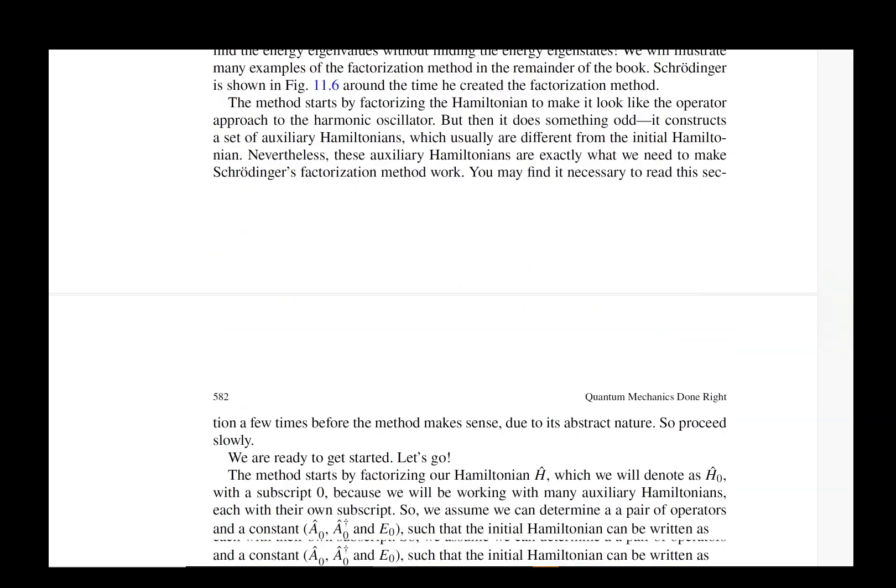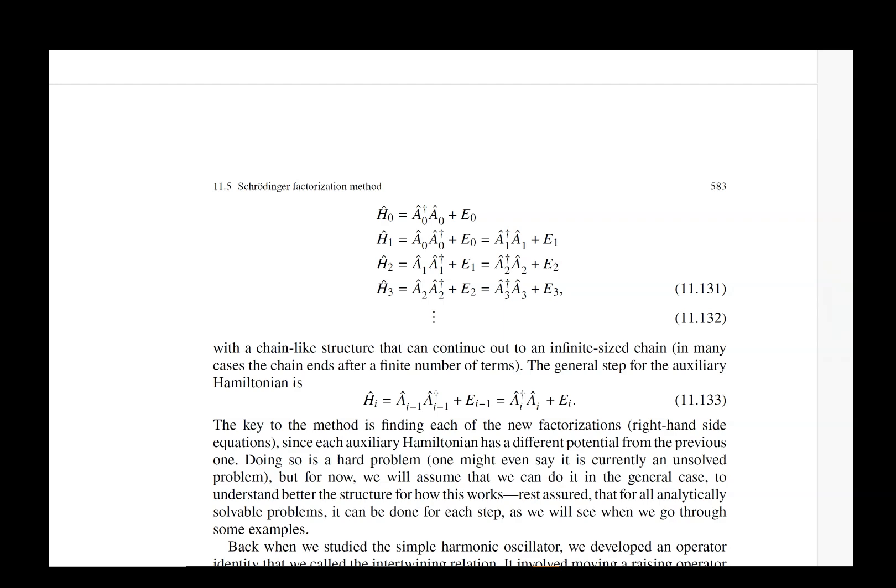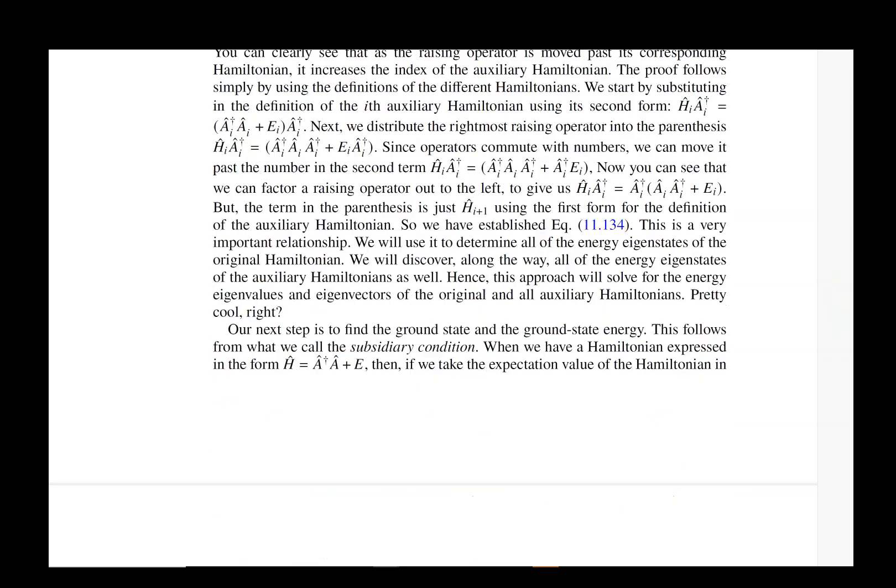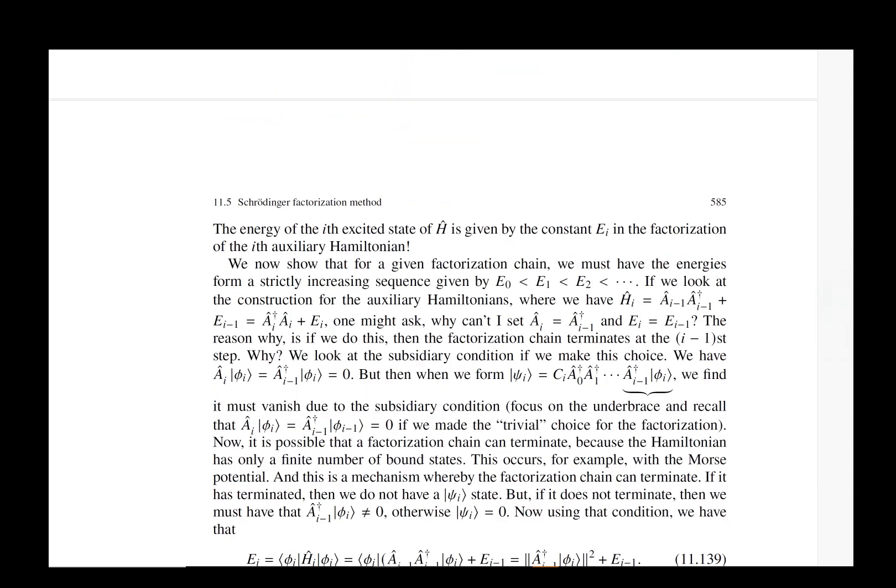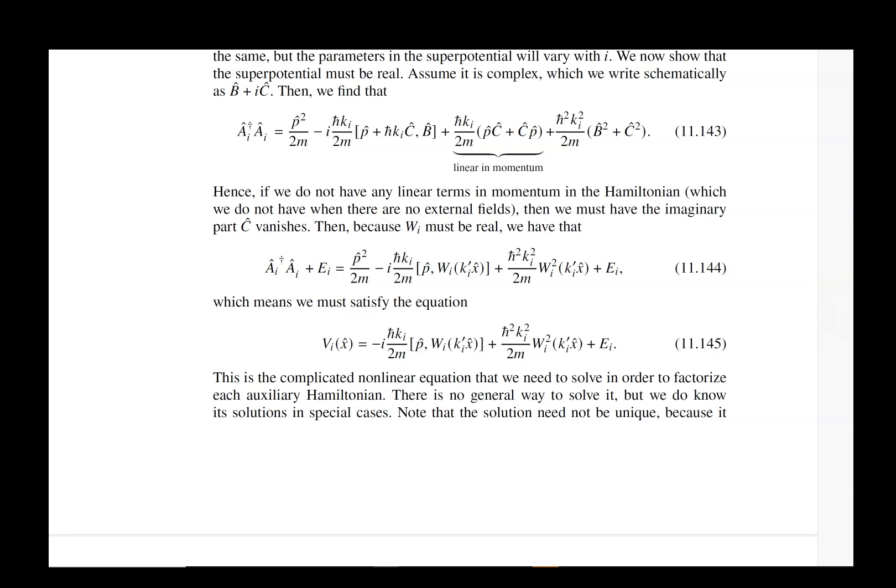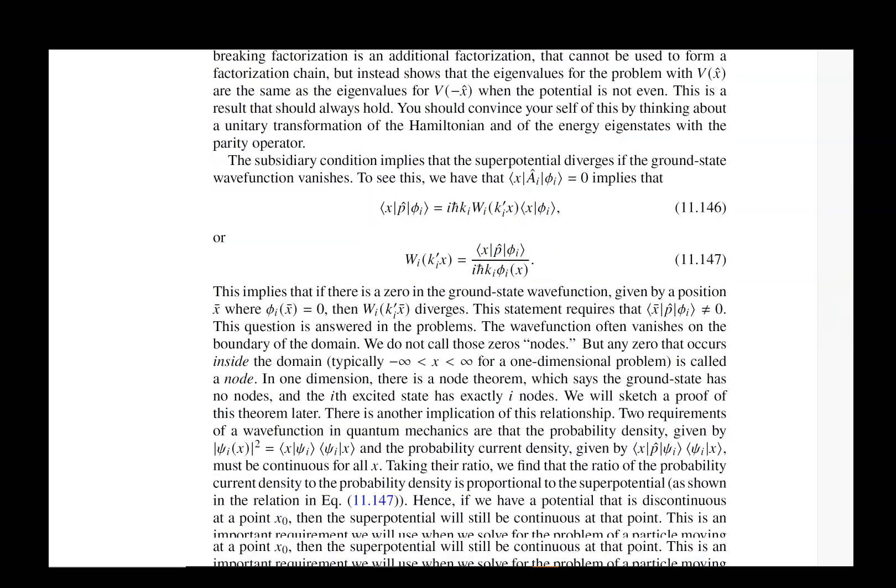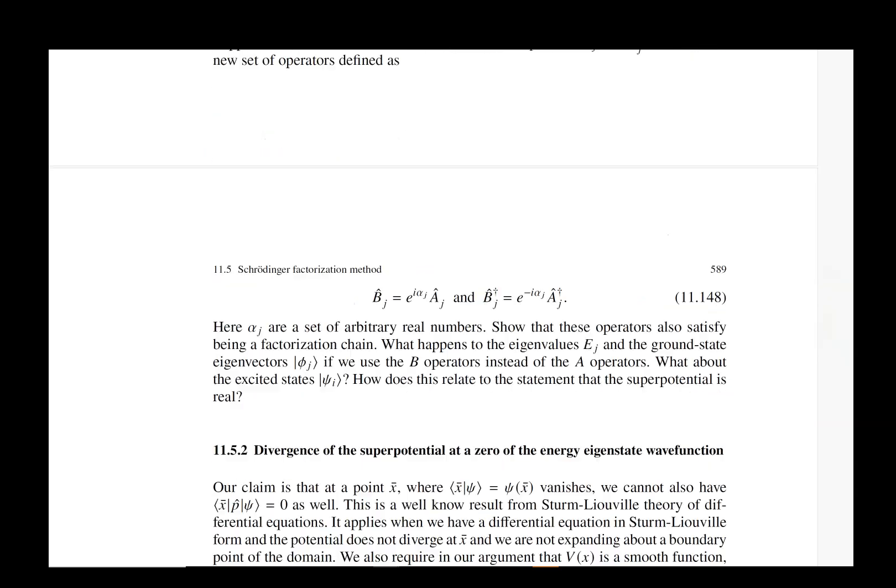Now we get to the factorization method in general. This was worked out by Schrödinger—he did this at the beginning of World War II in 1940-1941 when he was in Ireland. One of the interesting things about this, after we go through the formalism itself, there's going to be a nice image here of the different energy eigenstates.